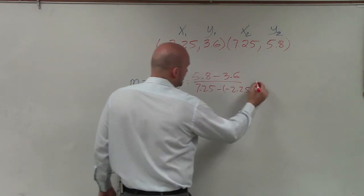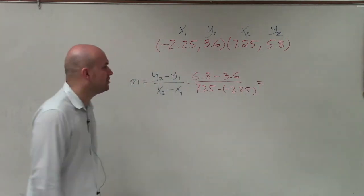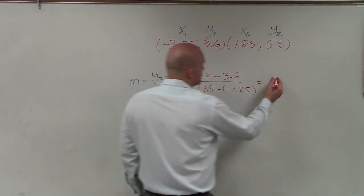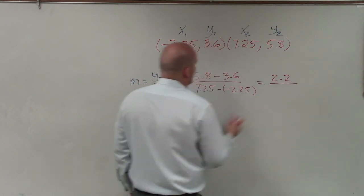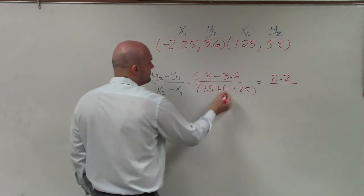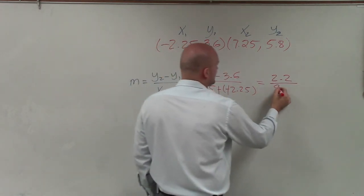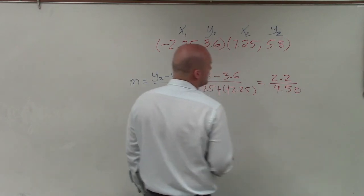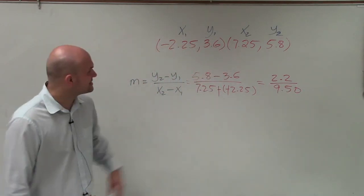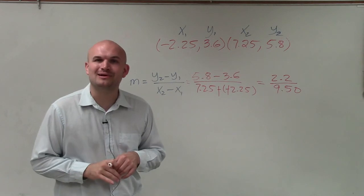So now I just go ahead and subtract across. And you can see 5.8 minus 3.6, that is going to be 2.2. And now you can see that's a double negative. I make that positive. So that will be 9.50. And there you go, ladies and gentlemen. That is going to be your slope between these two coordinate points. Thanks.